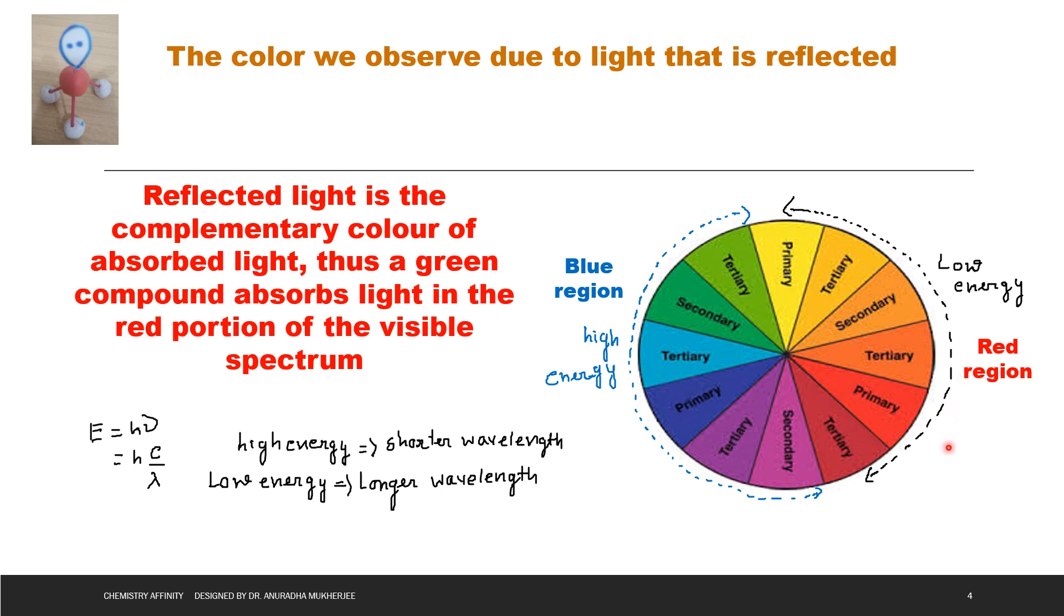And the red region, that is low energy, means larger wavelength. Now suppose if a molecule absorbs light of yellow region from this yellow color, then reflected light will be purple color.